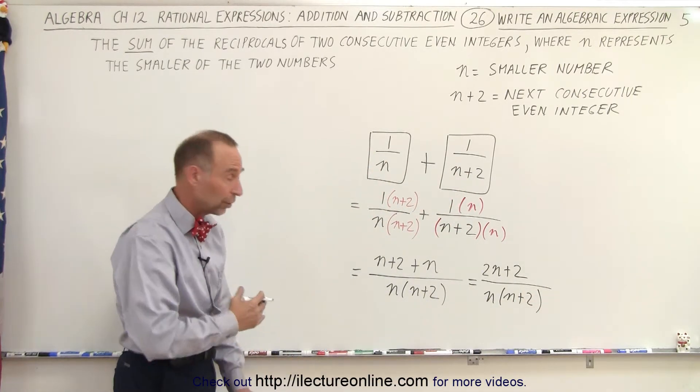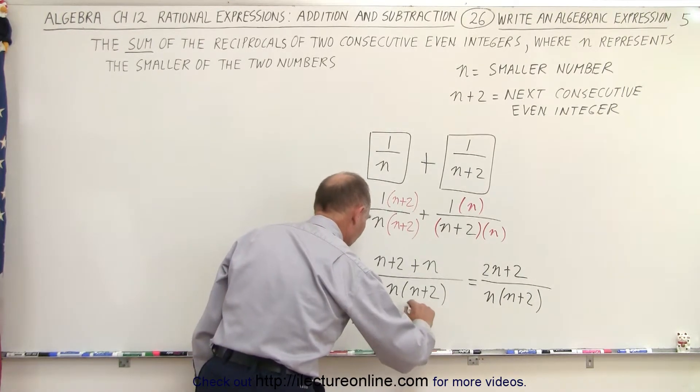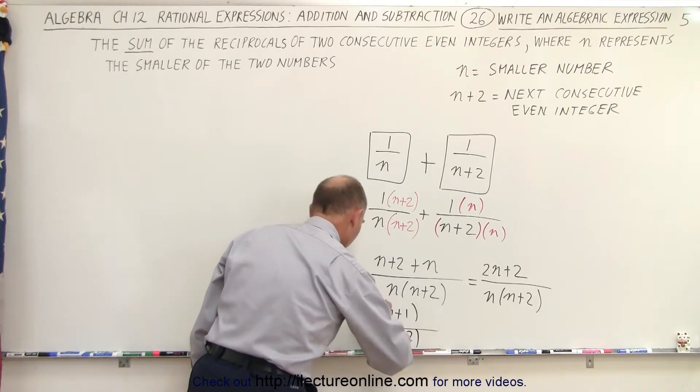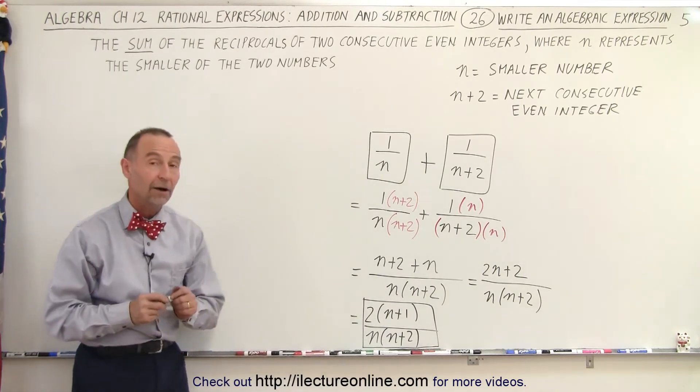And then finally, we can factor out a 2 from the numerator. So this becomes 2 times n plus 1 over n times n plus 2. And that would then be the final expression of that sum.